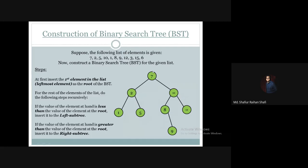Then we take 3. 3 is less than root 7, so it moves to the left subtree. The left subtree root is 2, and 3 is greater than 2, so 3 goes to the right subtree of 2. The right subtree root is 5 — 3 is less than 5, so 3 moves to the left subtree of 5.